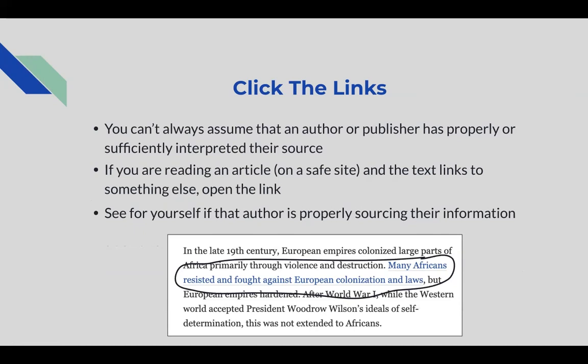You also want to click on the links provided in articles. You can't always assume that an author or publisher has sufficiently interpreted the source they're using. It's always a good idea to go back to those sources, read them yourself, and determine whether what was said in the article is true or false. Many sites use hyperlinks — writing that appears in blue — which you can click to access the site where the author got their information.